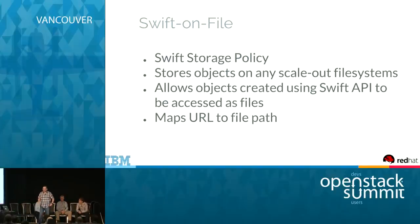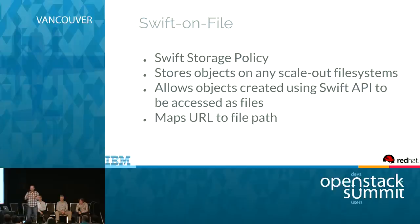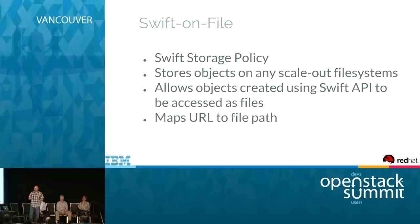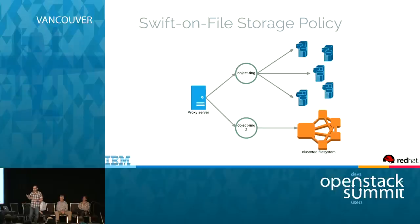Swift on file is a storage policy that has been available in OpenStack since the Juno release. It allows objects to be stored on scale-out file systems, as long as they support the POSIX interface. This allows objects to be accessed as files and files to be accessed as objects. It takes the URL used to place an object into Swift and maps it directly onto the file system. Storage policies are a technology available in OpenStack Swift since Juno that allows administrators to have different types of policies for their data.